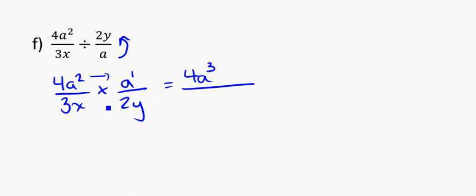And across the bottom, 3 times 2 becomes 6, and xy we just write out next to each other. Stopping to see if I can simplify. I can indeed. 4 over 6 can become 2 over 3. a3 xy.